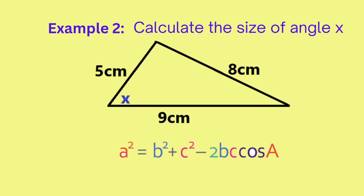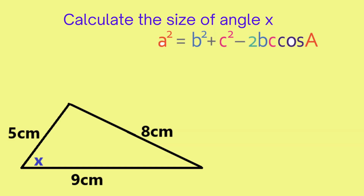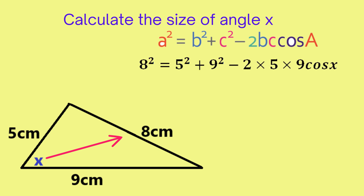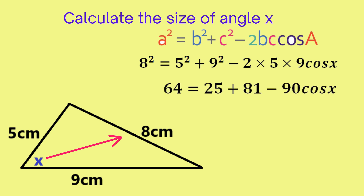We apply the cosine rule the same way as in the previous question. The cosine rule begins with the square of a side on the left — specifically the side opposite to the angle of interest. So eight squared is equal to the sum of the squares of the other two sides, minus two times those same two sides, five and nine, times cosine of x, since x is the angle opposite to the side measuring eight units.